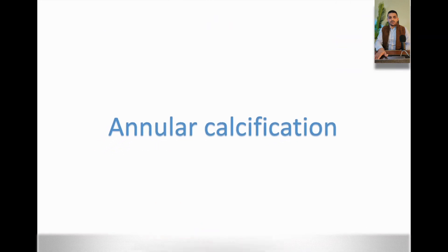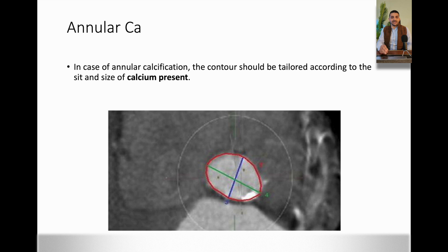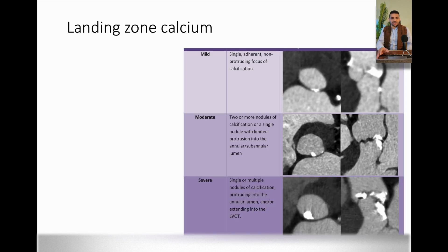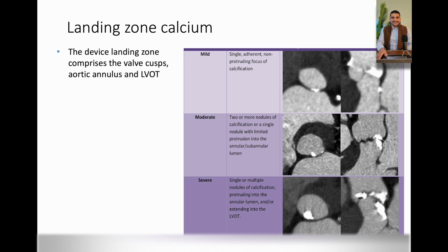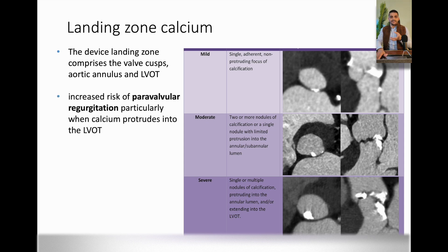We move on to the annular calcification classification and why it is important. Remember, this is all theoretical — we'll do the step-by-step in a different video. The annular calcification classification is extremely important for procedural assessment. We have mild, moderate, and severe calcification. The device landing zone comprises the valve cusps, aortic annulus, and the LVOT. If the calcifications are severe at the landing point, the predictability of paravalvular leak is high.